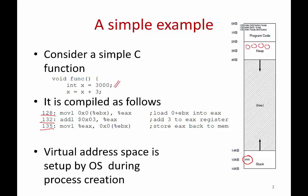This is the virtual address space of the process, created by the operating system. It loads the code from the executable from disk, allocates a heap, allocates a stack, and so on. This virtual address space is managed by the operating system — anytime you want more memory on the heap, you can make a system call to get more memory into this memory image.